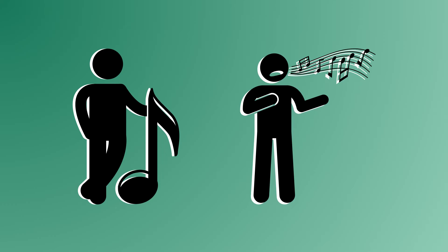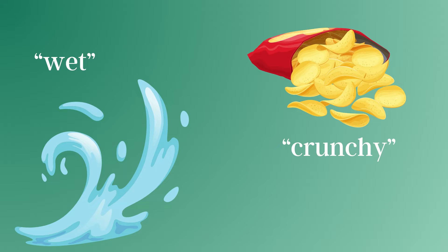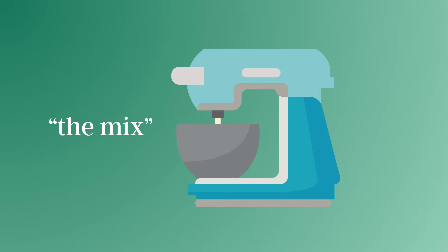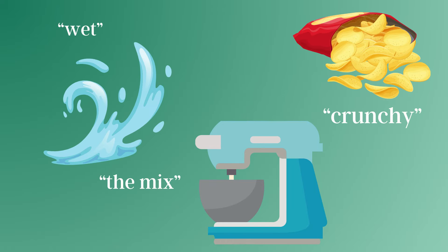If you want to be a musician, or even just someone who understands music and the language, there are certain terms that I feel no one really explains. For example, when someone says that something sounds wet or crunchy, or they say the mix is off, what does that even mean?